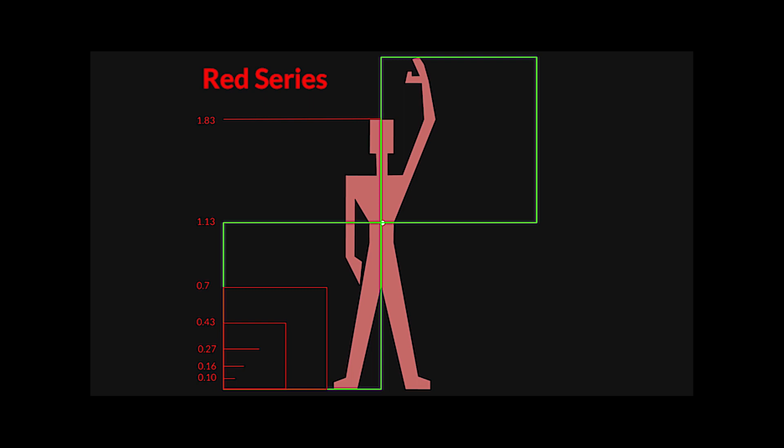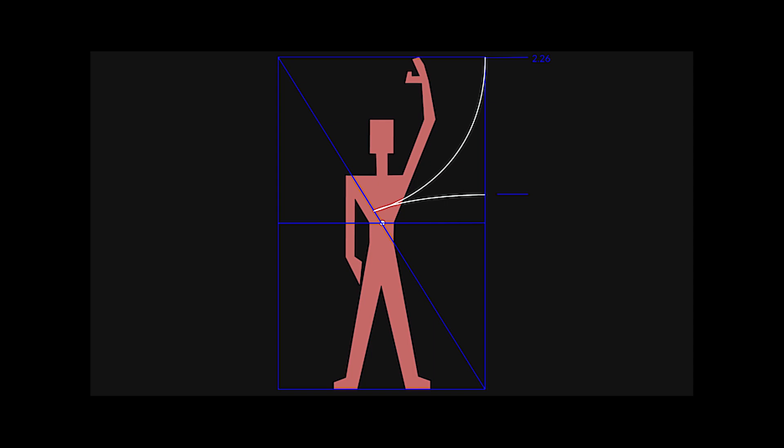He called this series the red series. He obtained the blue series by doing the following geometric construction, and of course, just as in the red series, they followed the Fibonacci series. With this method, Le Corbusier succeeded in combining the foot-based Anglo-Saxon measurement system, also known as imperial, with the metric decimal system.